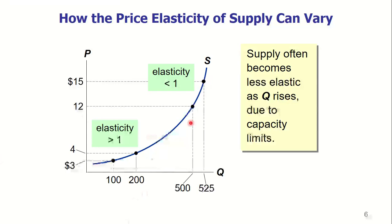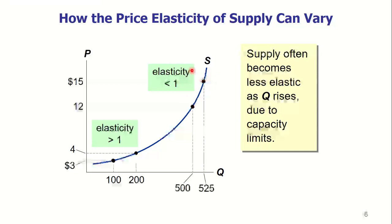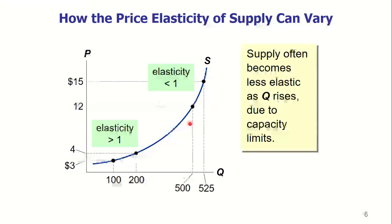Looking at this diagram, the flat part of the supply curve has elasticity greater than 1 — elastic supply. Where the supply curve becomes steeper, elasticity is less than 1 — inelastic supply. So supply often becomes less elastic as quantity rises due to capacity limits. The flat portion is elastic and the steep portion is inelastic.